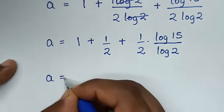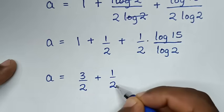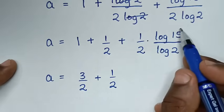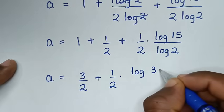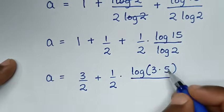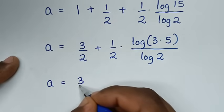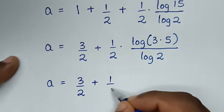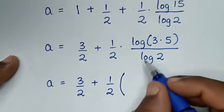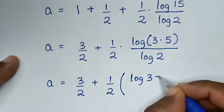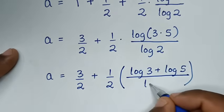Then log of 2 cancels log of 2 in the first fraction, giving 1 over 2. So a is equal to 1 plus 1 over 2 plus log of 15 over log of 2 times one-half. Now 15 breaks into prime numbers as 3 times 5, so we write log of 3 times 5 over log of 2.